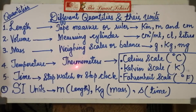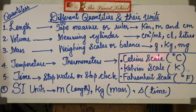There are three different types of temperature scales. Number one: the Celsius scale, represented by degree Celsius or degree Centigrade. Number two: the Kelvin scale, represented by K. Number three: the Fahrenheit scale, represented by degree Fahrenheit.